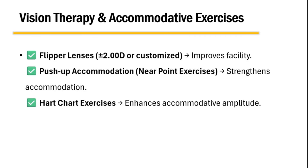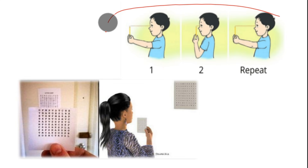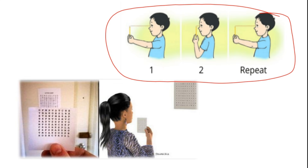For accommodative exercises, patients can do flipper lens exercises using plus 2 or minus 2 diopter lenses to improve accommodative facility. Push-up accommodation exercises can strengthen accommodation. The hart chart exercise enhances accommodative facility and amplitude. In the push-up exercise, the patient holds a pencil, tries to focus on its tip, and slowly moves it closer to the eye until blurring occurs.